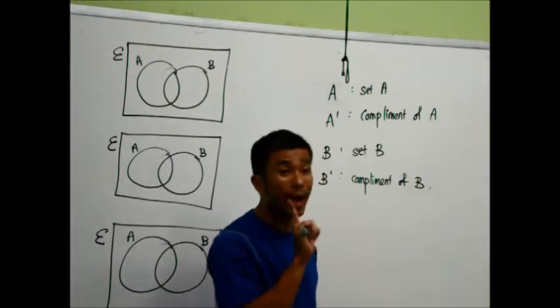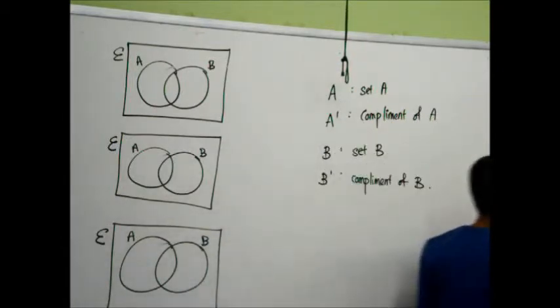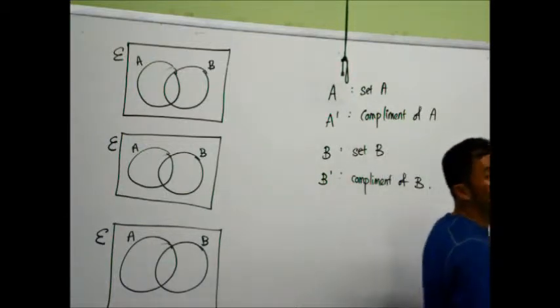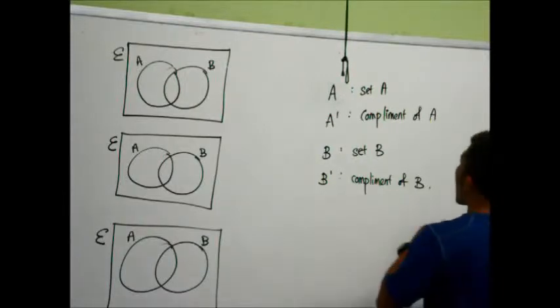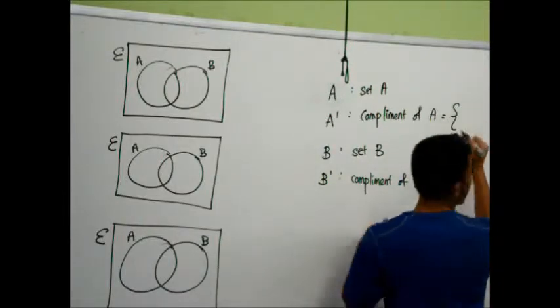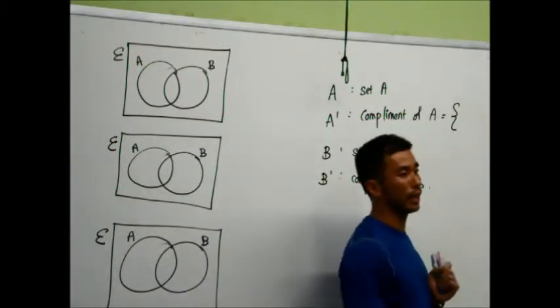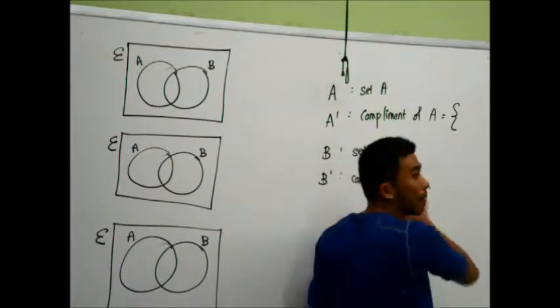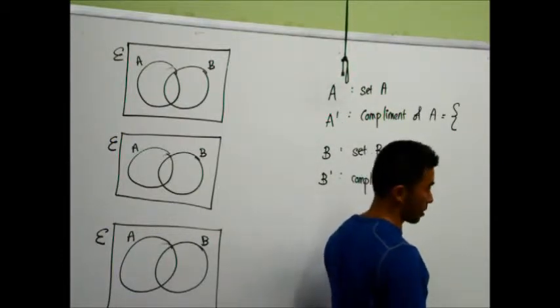If we were to go back to our previous example, set A will be all the elements just in A. What does the complement of A represent? Not A. Everything that is outside A. So if I want to list out the complement of A, it means everything that is outside A. What are the elements of A prime, or rather, complement of A in this space? Kimberly.